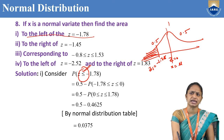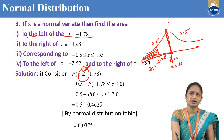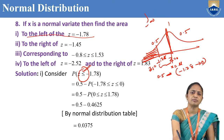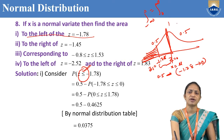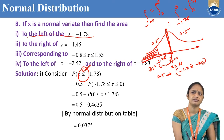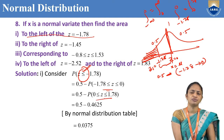Here we have P(Z ≤ -1.78), so we take the left side area. To find only this area, we compute 0.5 minus the area from -1.78 to 0. Since the normal curve is symmetric, the area from -1.78 to 0 can be written as the area from 0 to 1.78, so the expression becomes 0.5 minus the area from 0 to 1.78.